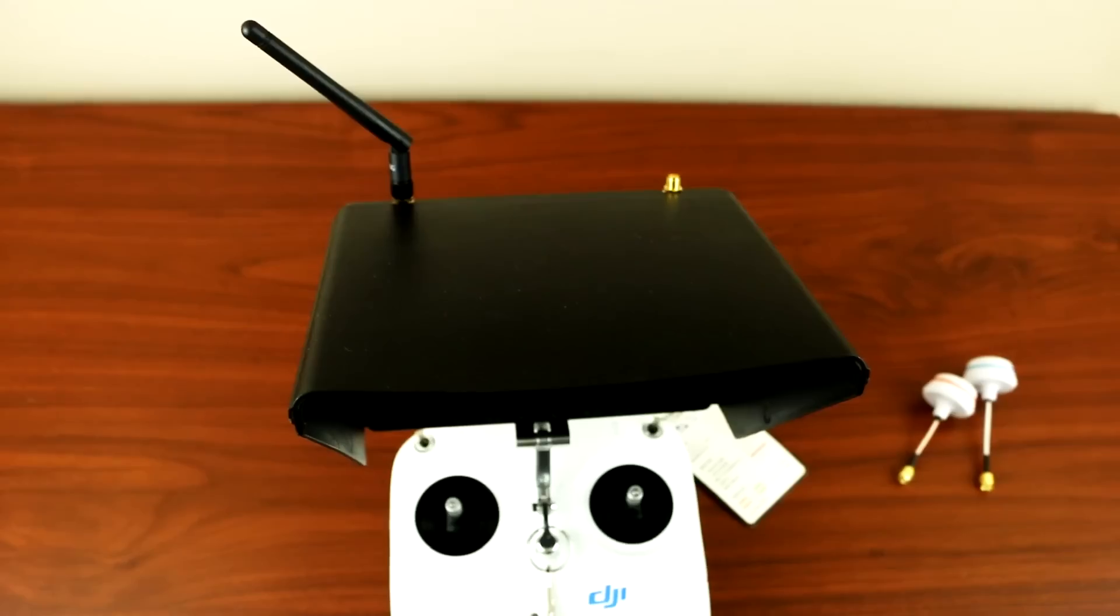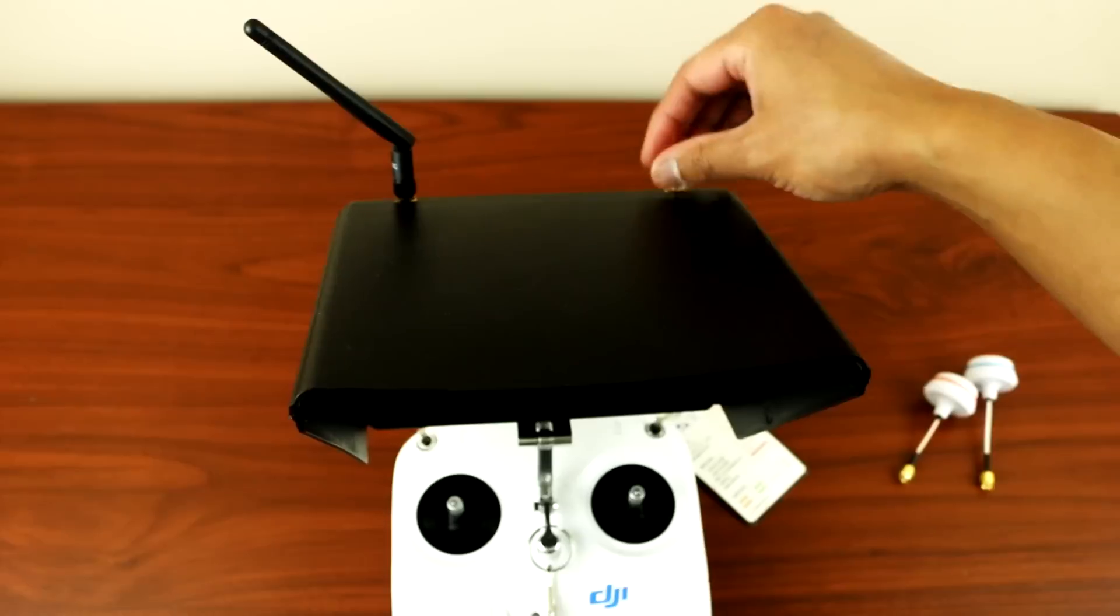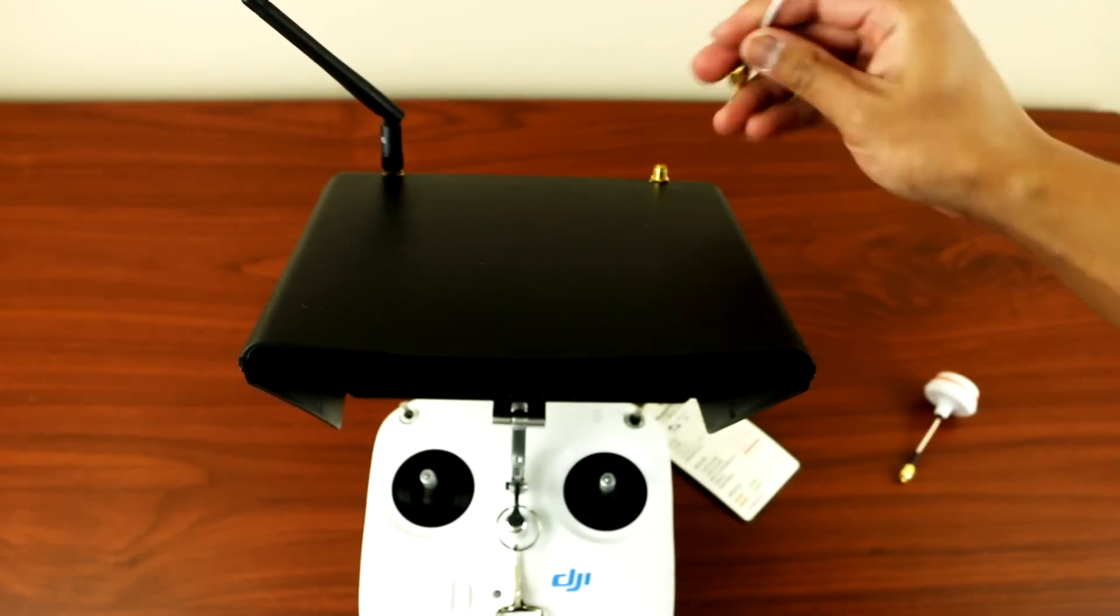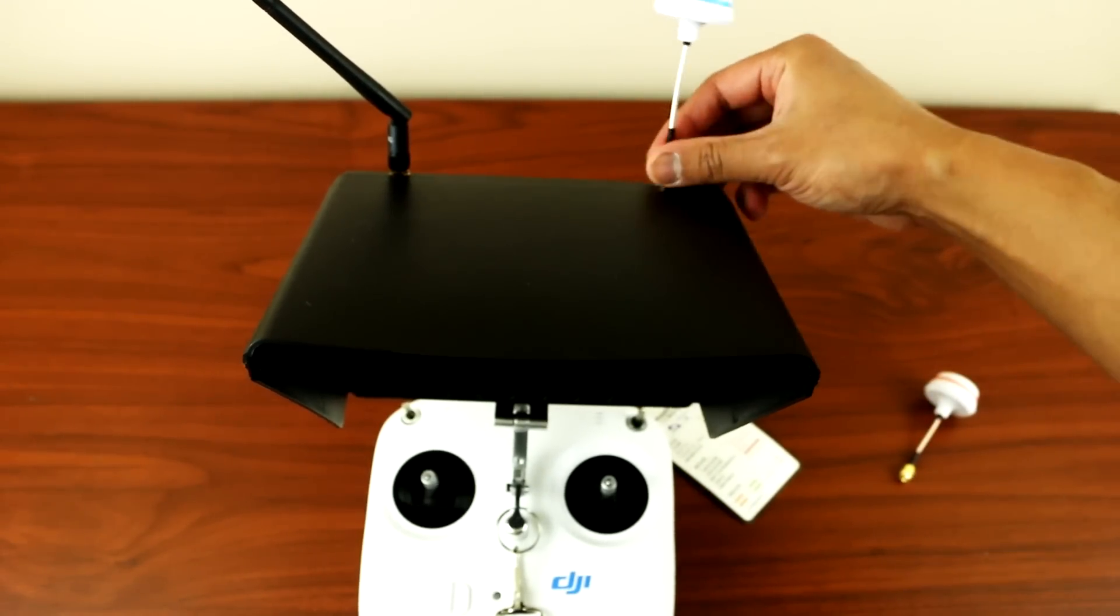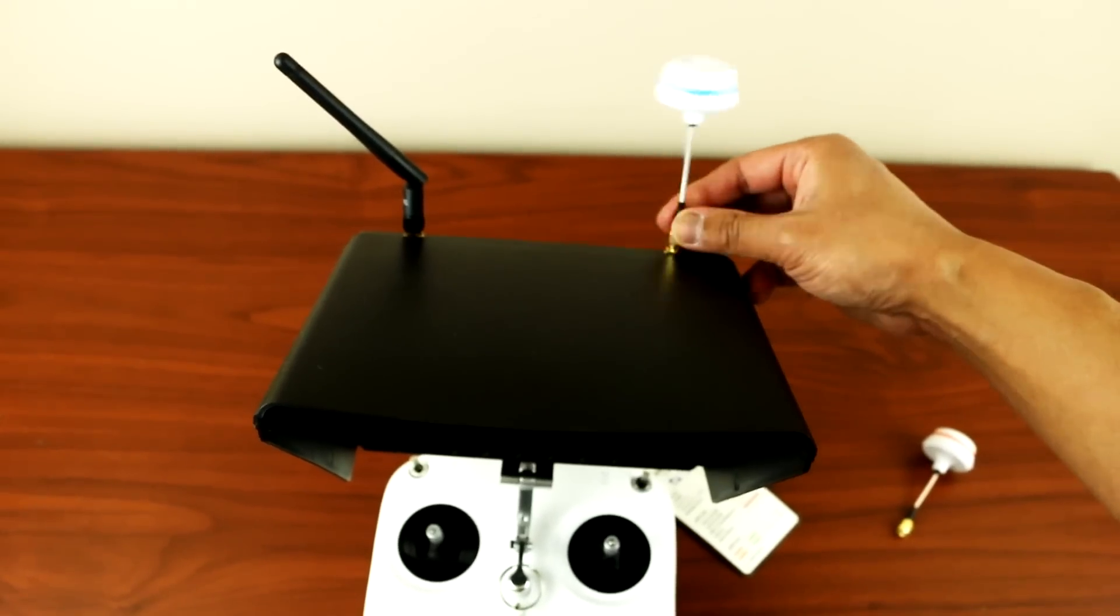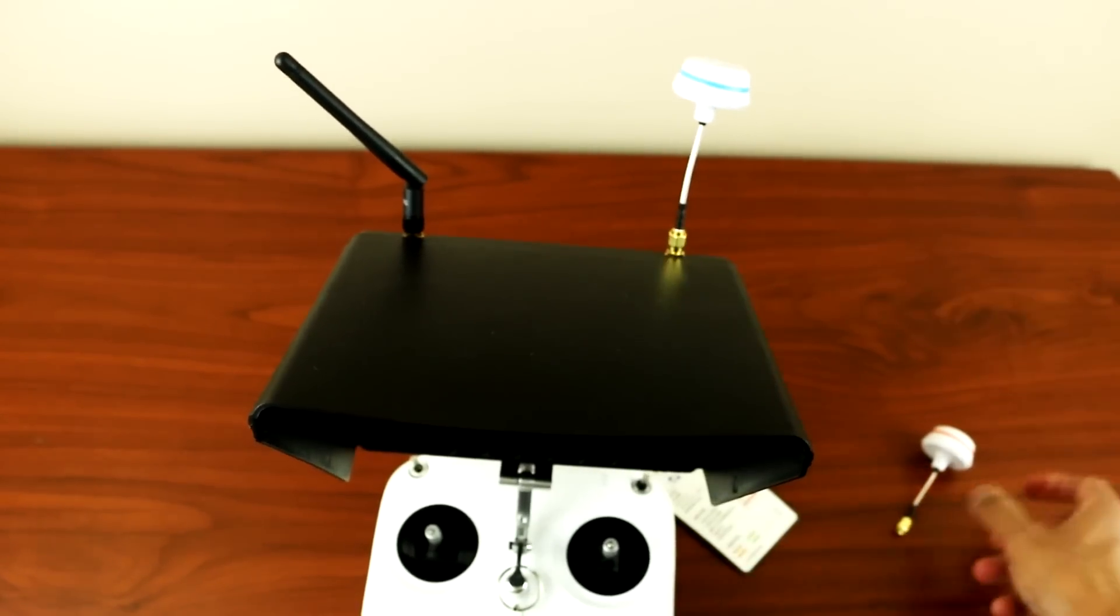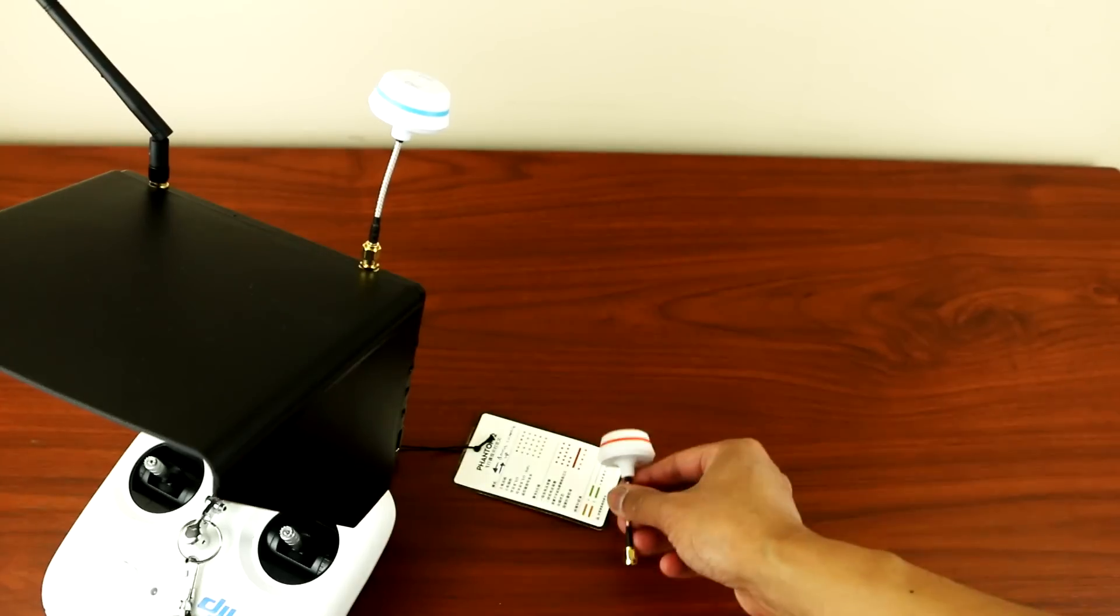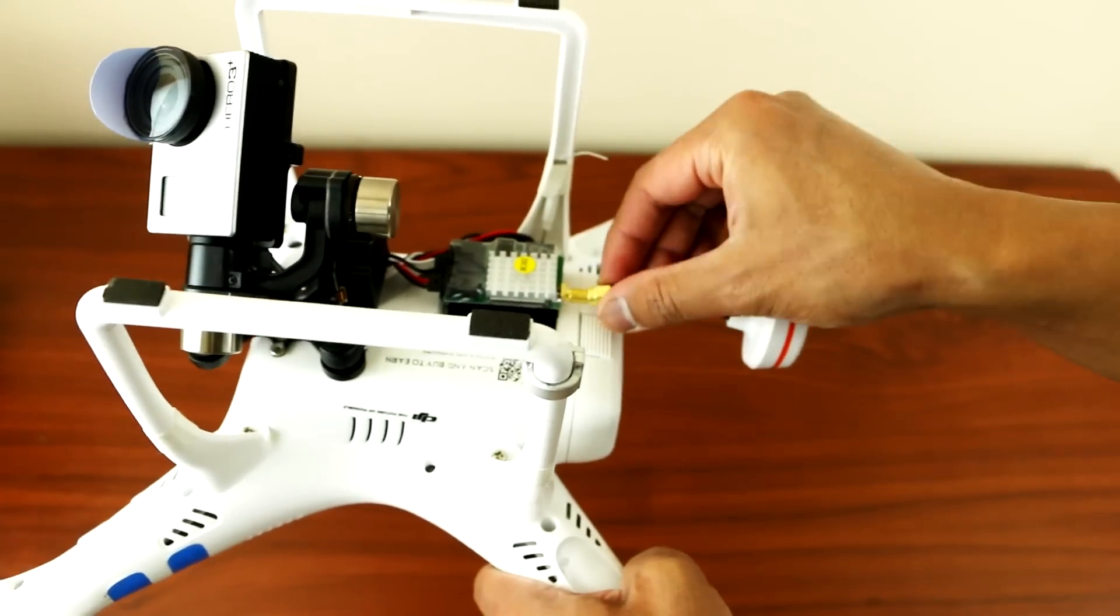Let's install them. I've already removed one of the antennas. All you have to do is place your receiver antenna and screw it in like so, and your transmitter will be going to your Phantom - just screw it in.